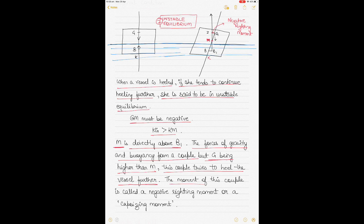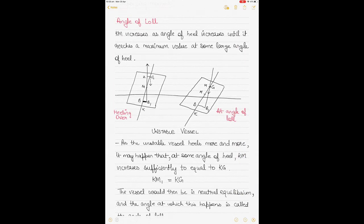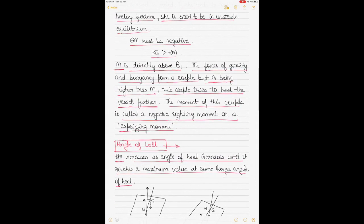The transverse metacenter M is directly above the new center of buoyancy B1. The forces of gravity and buoyancy form a couple, but because gravity is higher than M, this couple tries to heel the vessel further. This is called the negative righting moment, or capsizing moment. At this stage, we introduce the concept of angle of loll — a very important concept for studying stability.